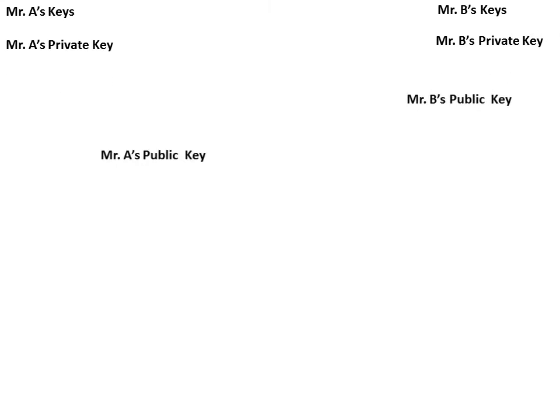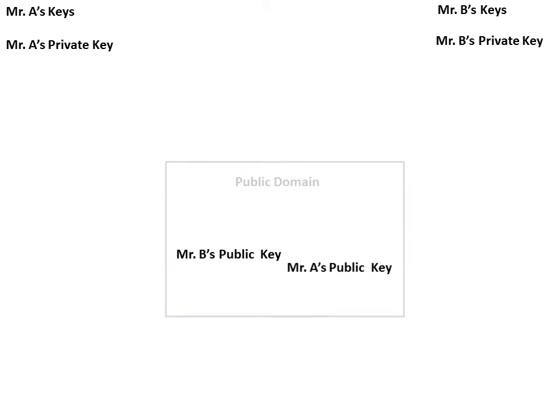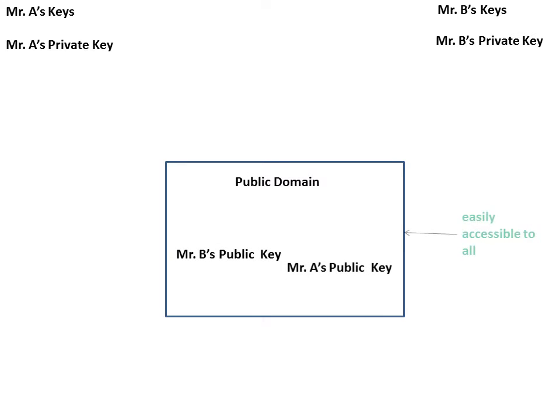Let us understand who has access to asymmetric keys. For example, Mr. A and Mr. B both have a private key as well as a public key. Their public keys will be available in the public domain and are accessible to all, but their private keys will be accessible only to their respective owners.